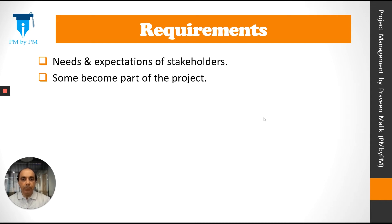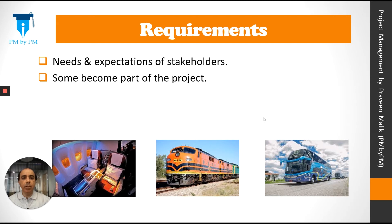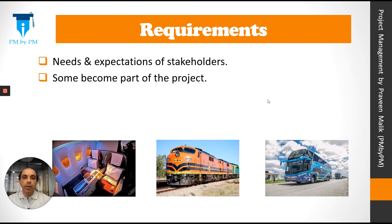Let's look at our holiday project example. Travel arrangements was part of the scope, and the travel arrangements can be done by airplane, train, or bus. Now different stakeholders might have different requirements — somebody might say they want to go on an airplane in business class, but others might say a bus journey is more fun. The requirements could be many, but some will become part of the project and others will not be part of the project scope.